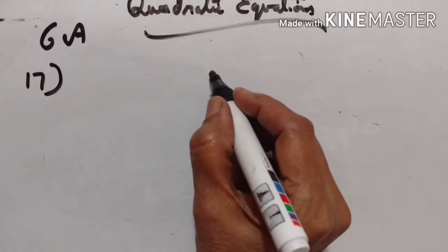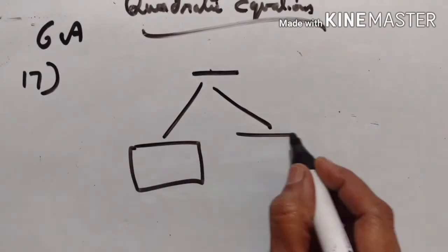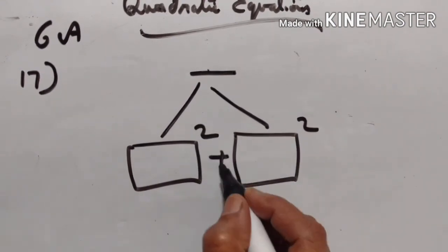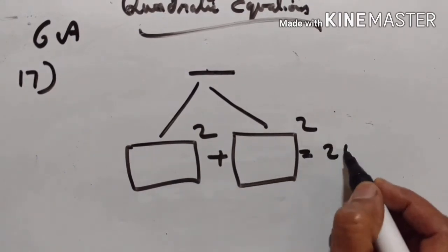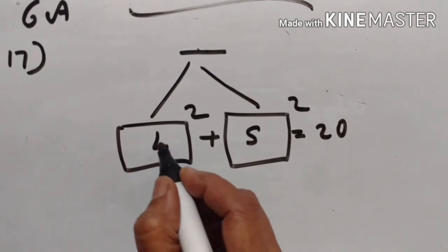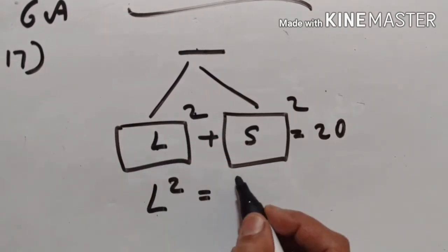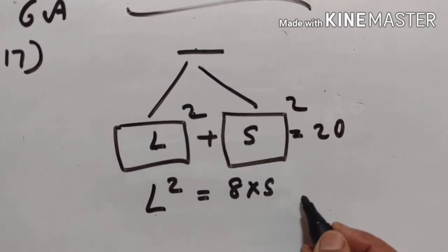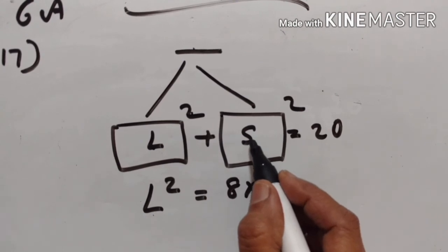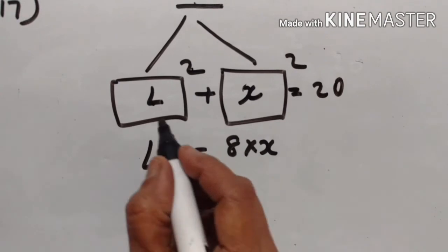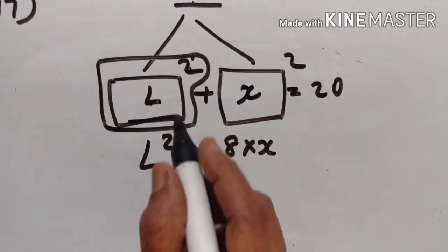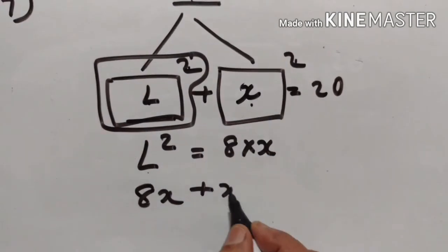Problem 17: A positive number is divided into 2 parts such that the sum of the squares of the two parts is 20. The square of the larger part is 8 times the smaller part. Taking x as the smaller part and L as the larger part, L squared equals 8x. So L squared plus x squared equals 20.